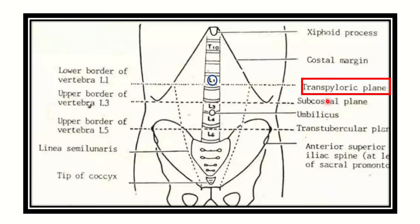So the transpyloric plane is located at the level of the lumbar 1 vertebral level. There are some other important levels — the umbilicus level is also important for exams, and it is located between the lumbar 3 and lumbar 4 vertebral levels. The transpyloric plane is at lumbar 1.